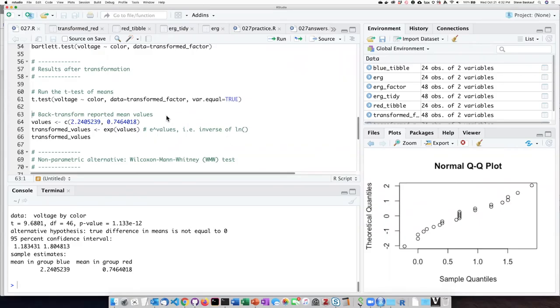At this point I'm basically going to use R like a calculator. I just constructed a vector that had the blue and red log means in it, and then I took the exp which is e to that vector to produce the transform values of the blue and red means.